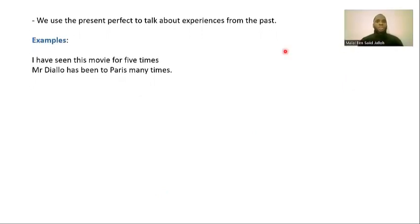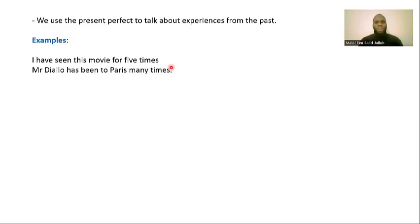We also use the present perfect to talk about experiences from the past. If you have experienced or done something in the past, you can use the present perfect. For example: 'I have seen this movie five times' — once, twice, or 'I have seen this movie many times.' Another example: 'Mr. Giallo has been to Paris many times.' It's not just once he has been to Paris, but many times.